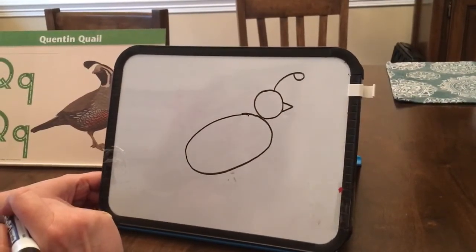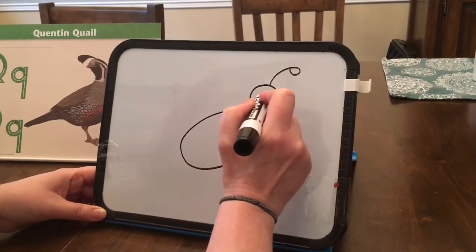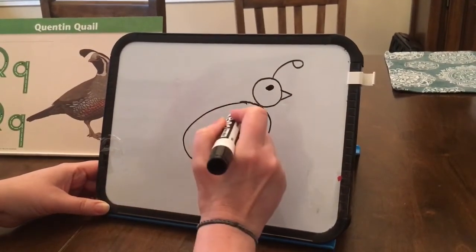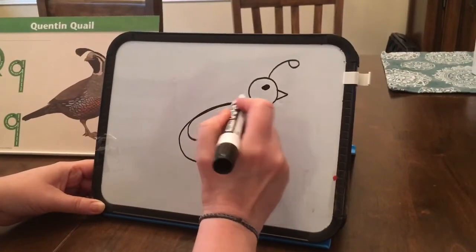Now Quentin Quayle can't see anything so we have to give him an eye. So I'm going to make a little black circle for his eye and then we're going to draw another oval for his wing. We can just draw another oval right here.